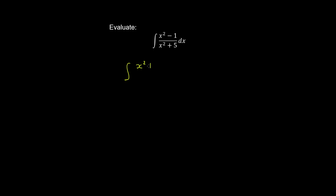We have x squared plus 5, and then minus 6 in the numerator gives us minus 1, divided by x squared plus 5, integrated with respect to x. We can write this integral as the integral of 1 — because x squared plus 5 on x squared plus 5 is 1 — and then minus 6 on x squared plus 5, integrated with respect to x. As a hint, this second part of the integral is going to be an arctan.